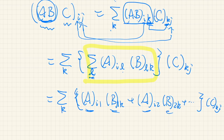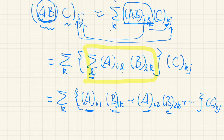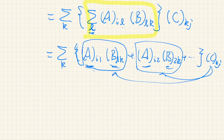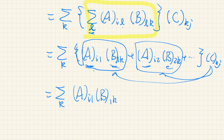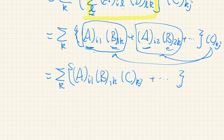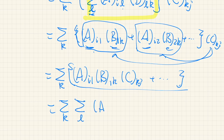These are just real numbers, so we can use the distributive law of ordinary real numbers. So this is one term multiplied by C_{KJ}, and this is another term multiplied by C_{KJ}. So we have a sum over K and sum over L of A_{IL} times B_{LK} times C_{KJ}.